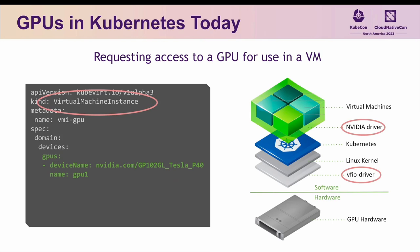With some changes to the system software, GPUs can also be made available to virtual machines such as KubeVirt and Kata. Instead of running the NVIDIA GPU driver directly on the host, it is instead run inside each virtual machine individually, with the standard Linux VFIO driver making the requested GPU hardware visible to each VM.